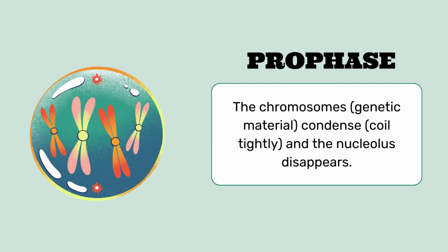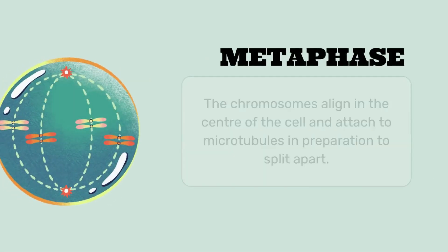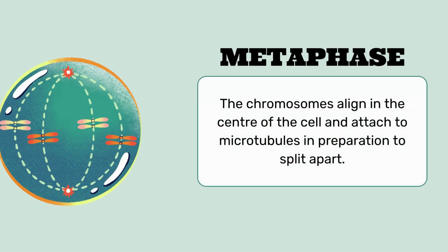Only chromosomes are visible. Next is metaphase. Metaphase is the phase in which chromosomes arrange themselves in alignment. Chromosomes align in the center of the cell and attach to microtubules in preparation to split apart. In this diagram, you can see that chromosomes arrange themselves.